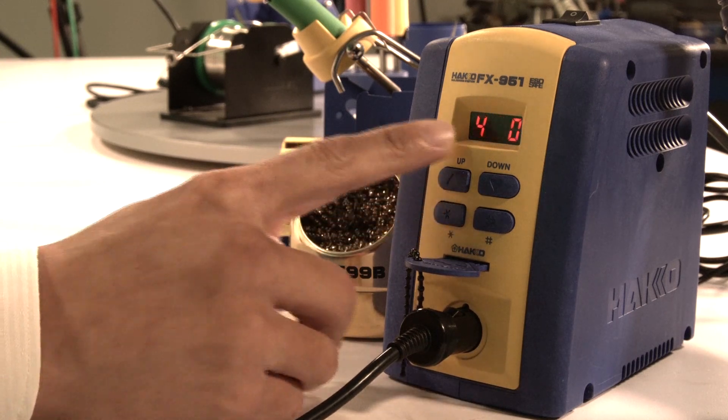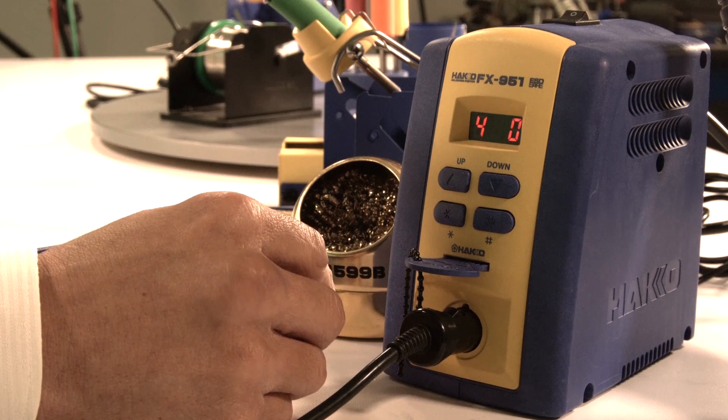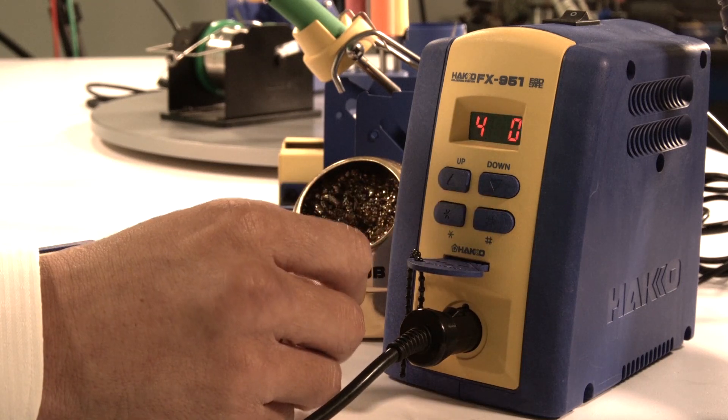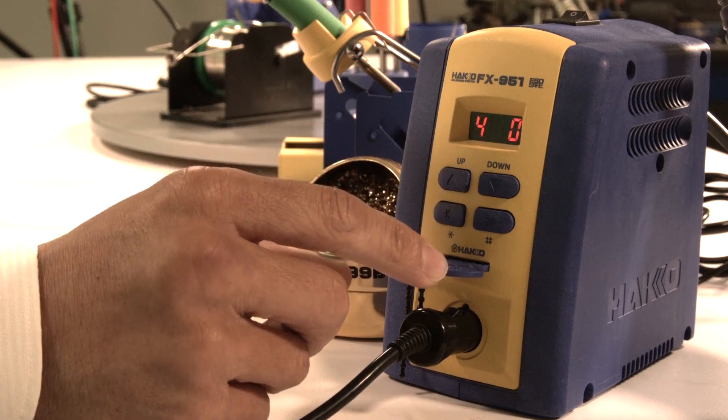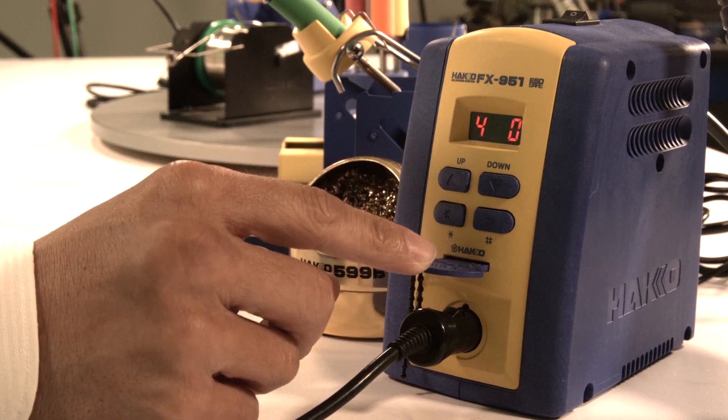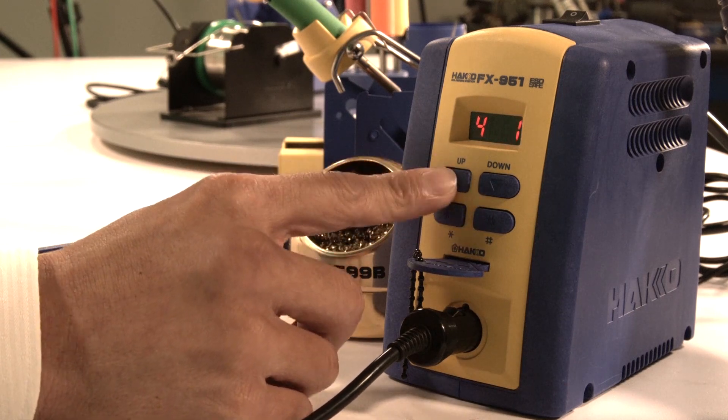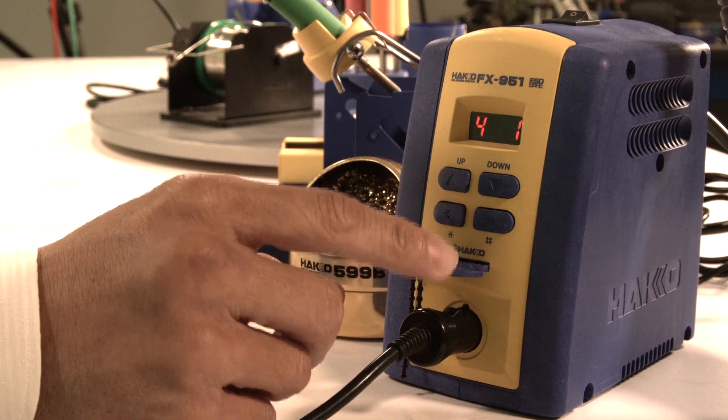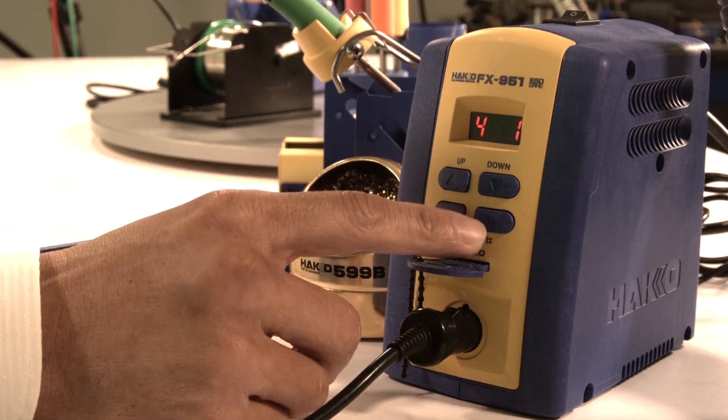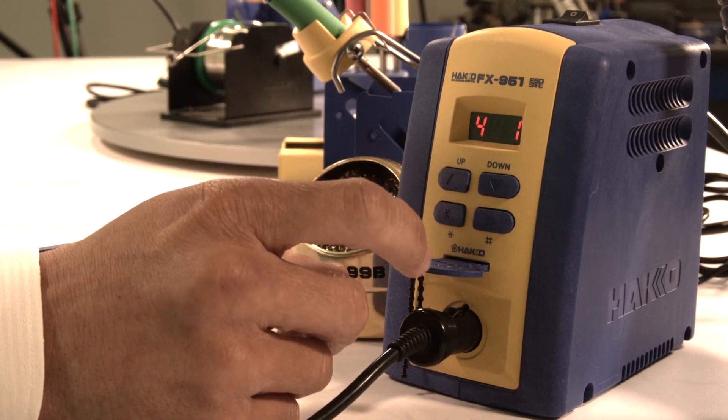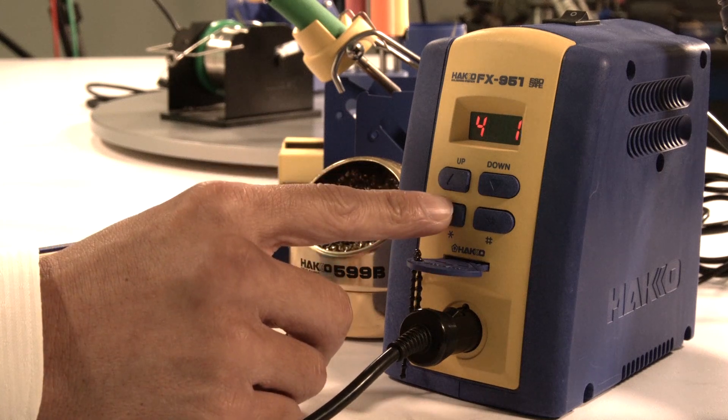Parameter four is the operator/supervisor control over your offset values. Zero means the operator always needs the lock key to make any changes, even on the offset value. If I change that to one, the operator will not need the lock key when making changes to the offset value. I had it at zero, let's turn it to one.